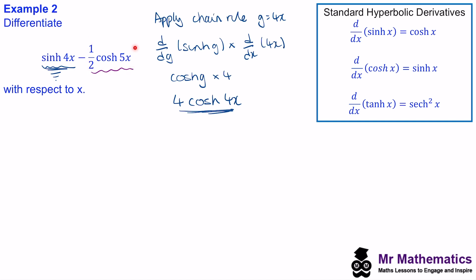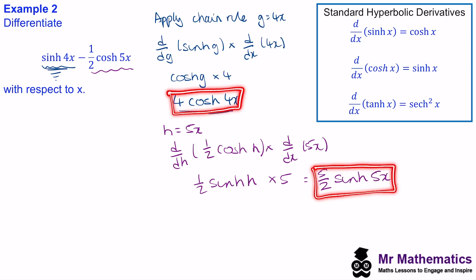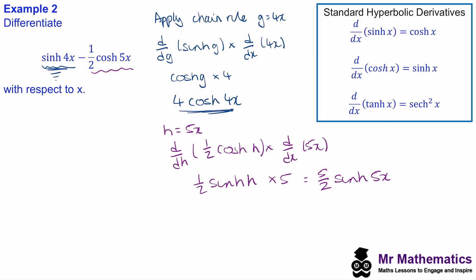For one half cosh(5x), we apply the chain rule again letting h equal 5x. We get d/dh of one half cosh(h) multiplied by d/dx of 5x. The derivative of half cosh(h) is one half sinh(h), and the derivative of 5x is 5, so this becomes (5/2) sinh(5x). Putting the two parts together, the full derivative is 4 cosh(4x) minus (5/2) sinh(5x).